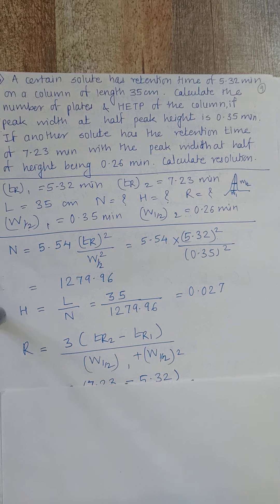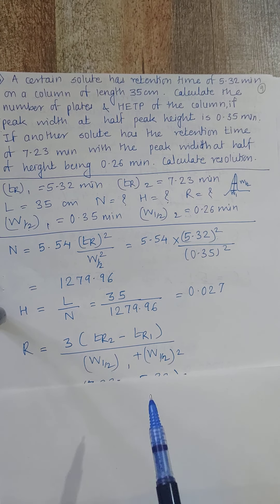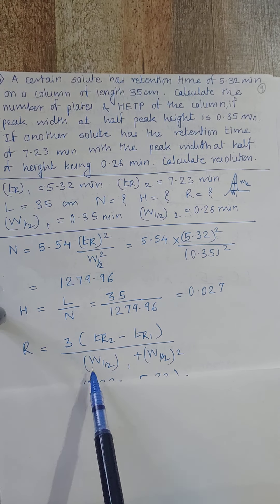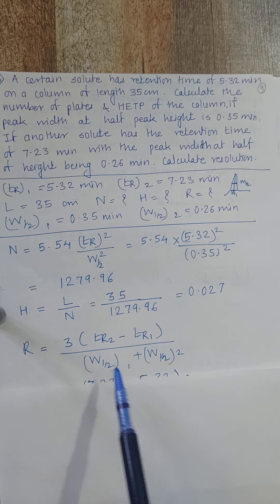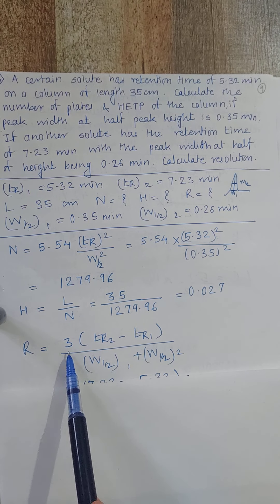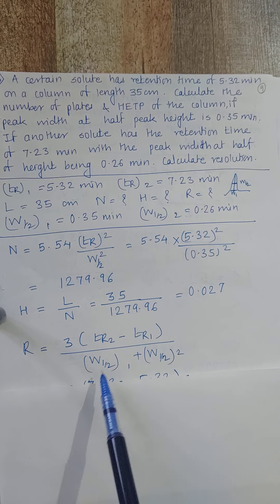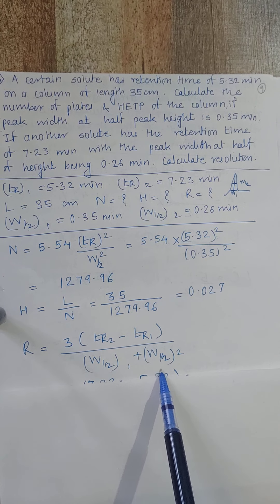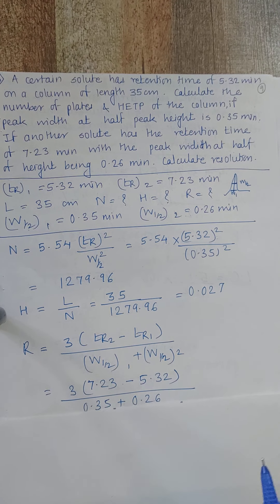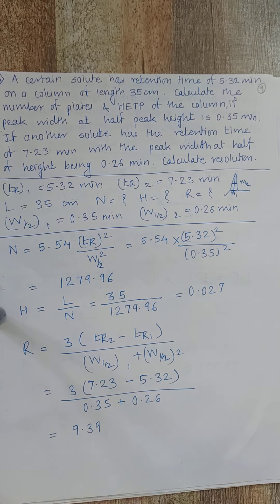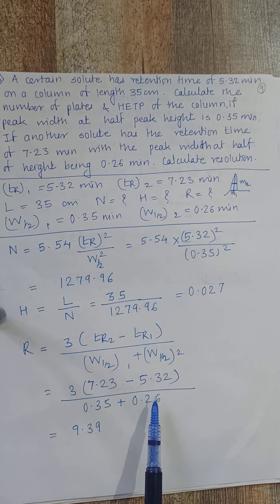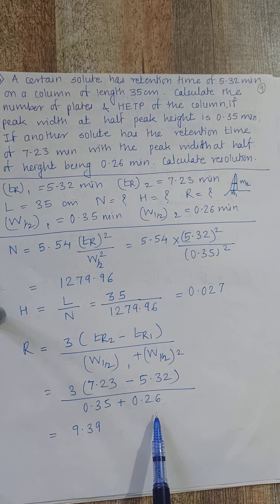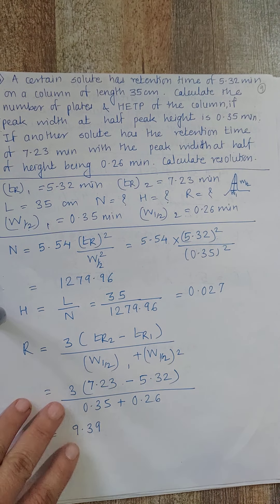For resolution using half-peak widths, the formula is: R = 1.18 × (TR2 − TR1) / (W½(1) + W½(2)) — here stated as thrice times... actually: R = 3 × (7.23 − 5.32) / (0.35 + 0.26) = 9.39.